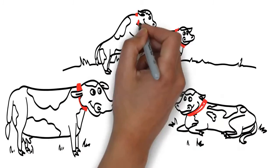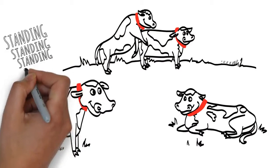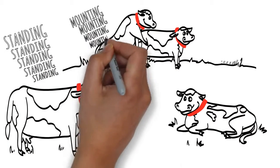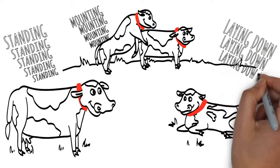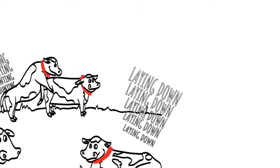Gesture recognition algorithms record whether or not the cow is feeding, lying down, standing up, mounting, sniffing, licking, chin resting, headbutting, and other behaviors.